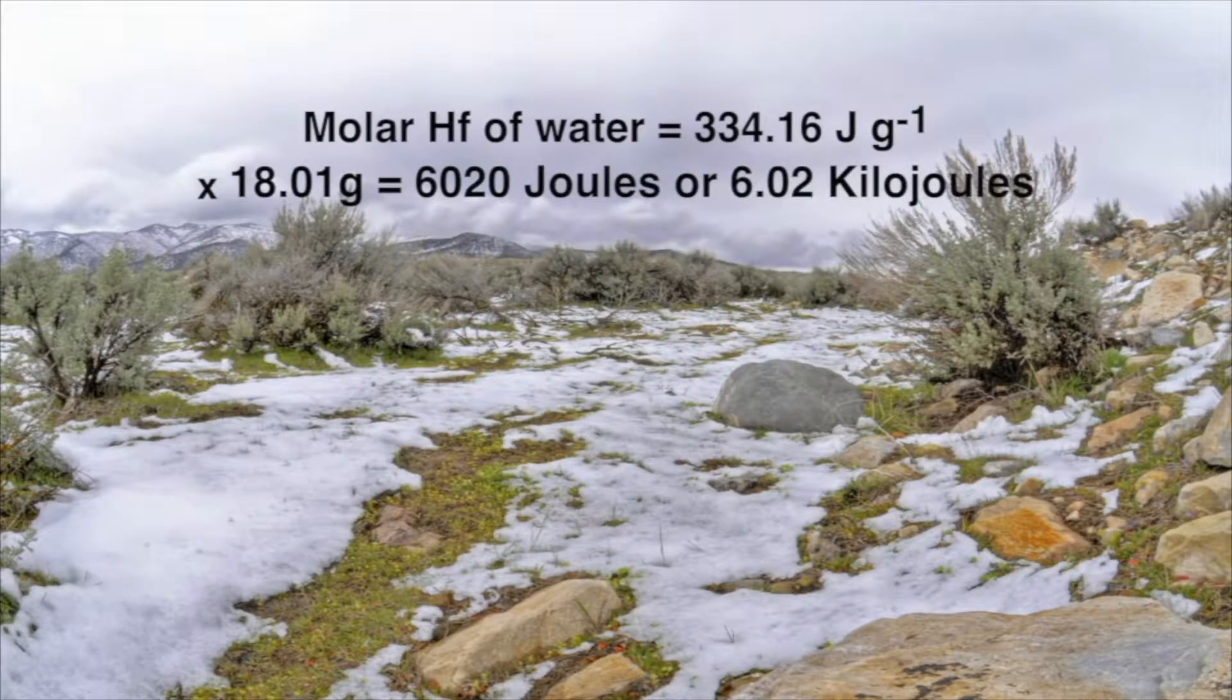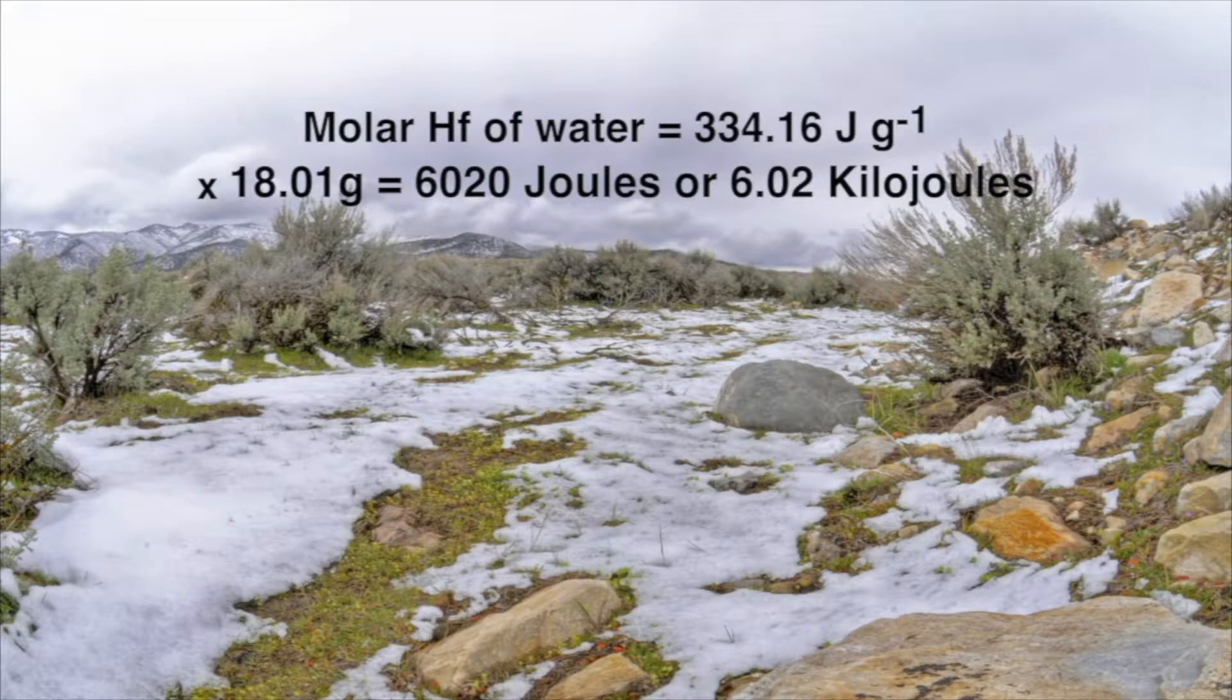For water, this can be calculated by multiplying its heat of fusion, 334.16 joules per gram, by the mass of 1 mole of water, 18.01 grams. So the heat of fusion of 1 mole of water is 6,020 joules, or 6.02 kilojoules.